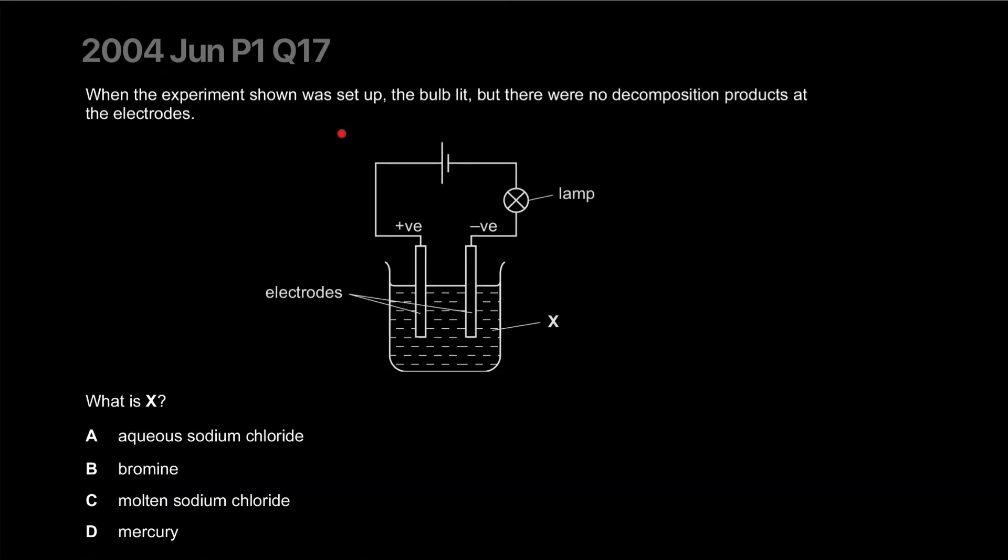The experiment shows when you start the current, the bulb lit, but there was no decomposition products at the electrodes. How curious. What is X? Aqueous sodium chloride will produce hydrogen at the negative electrode and you'll see bubbles, and oxygen at the positive electrode because the hydroxide ion will discharge.